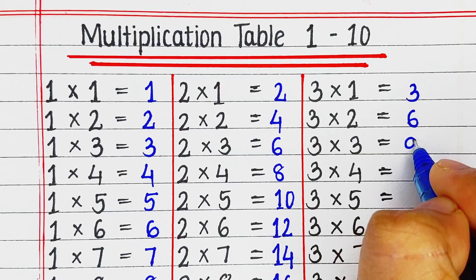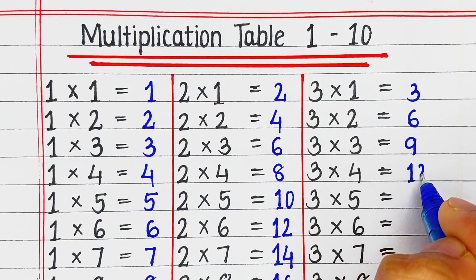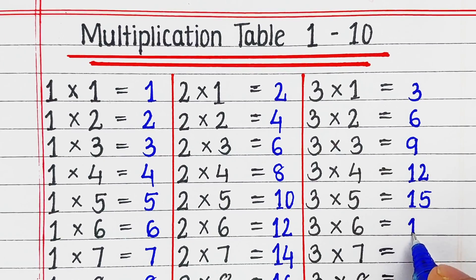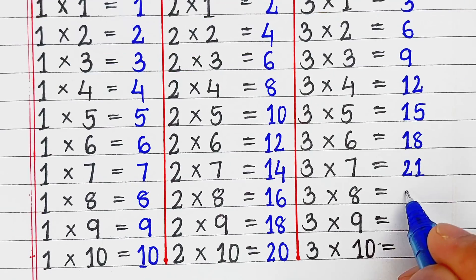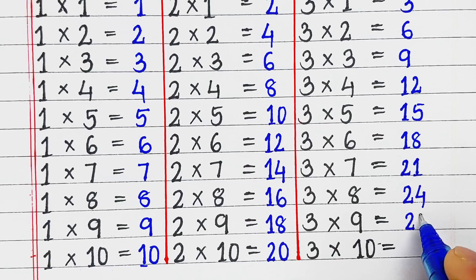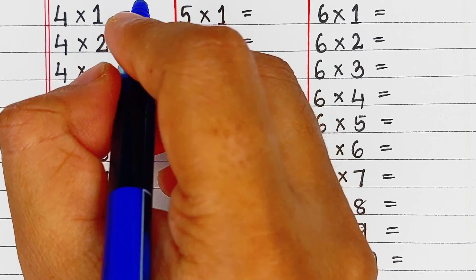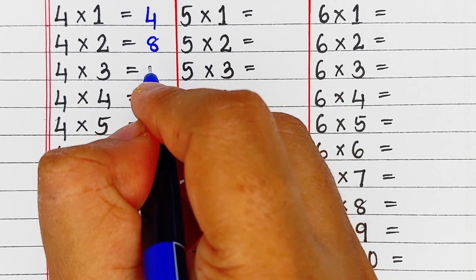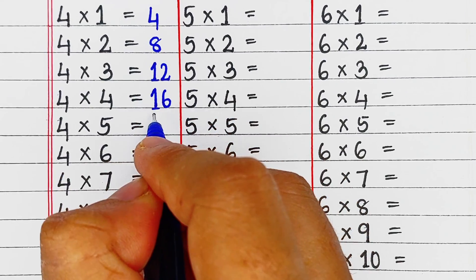Next is table of 3. 3 ones are 3, 3 twos are 6, 3 threes are 9, 3 fours are 12, 3 fives are 15, 3 sixes are 18, 3 sevens are 21, 3 eights are 24, 3 nines are 27, 3 tens are 30.